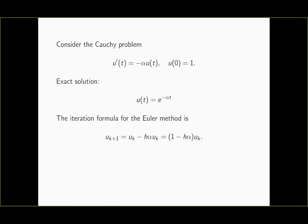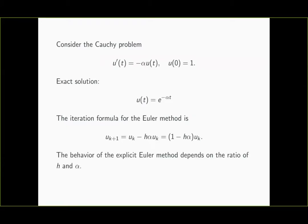For this simple model problem the Euler method is extremely simple: we start with u_0 and keep multiplying by the factor (1 - h·α). We multiply u_0 by (1 - h·α) to get u_1, then apply that factor again to get u_2, u_3, and so on. The behavior of the explicit Euler method depends on the ratio of h and α, and depending on this ratio we see quite interesting behavior, much of which is unfortunately rather bad, as we are going to see soon.